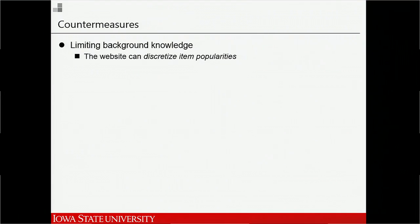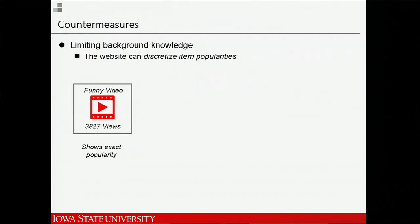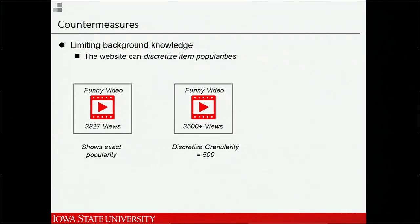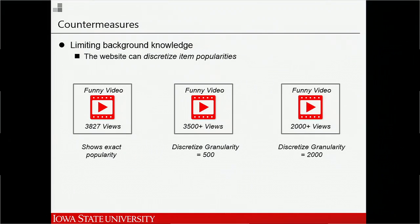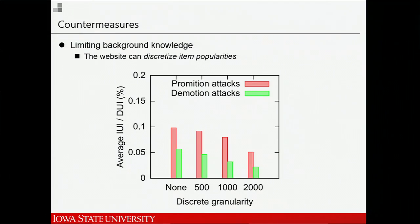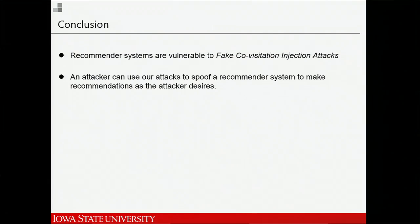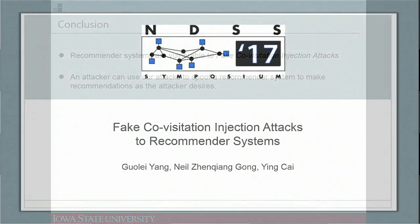One effective countermeasure is to limit the attacker's background knowledge, for example by discretizing item popularity. If the original item popularity is 3,000, we can tell the user the item has more than 3,500 views, or simply report it as more than 2,000. By doing this, we can decrease the threat significantly. In conclusion, recommender systems are in general vulnerable to this simple fake covisitation injection attack, and an attacker can manipulate a recommendation system to recommend items of his favor.